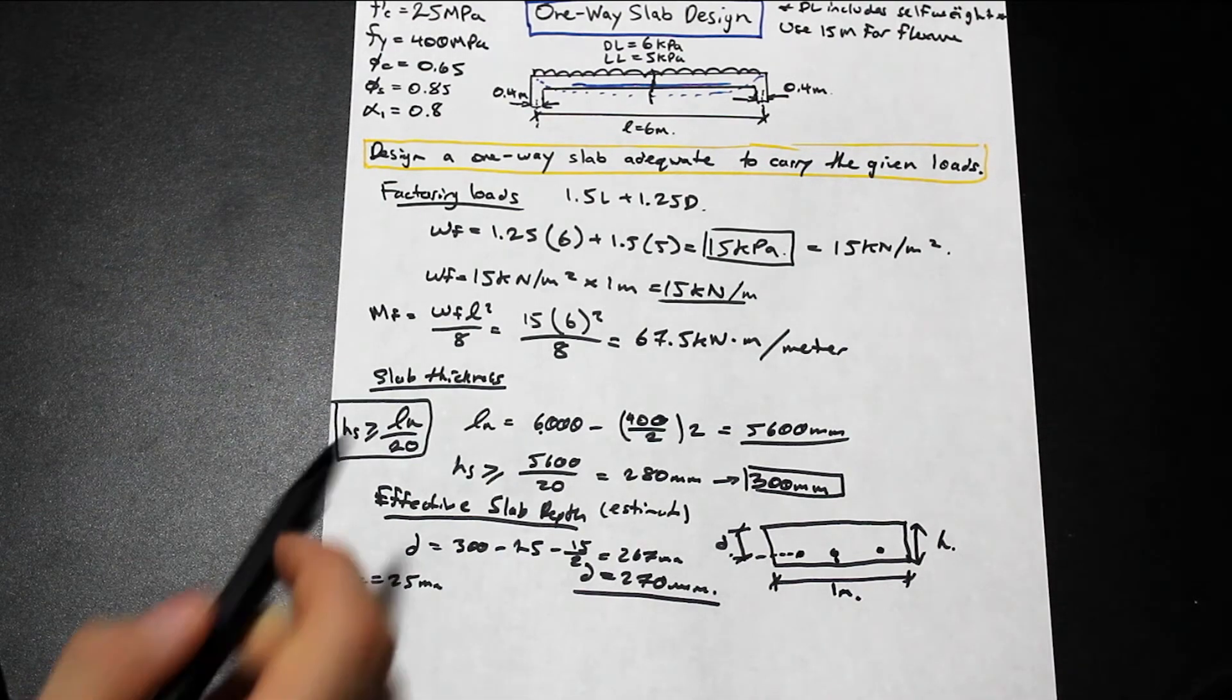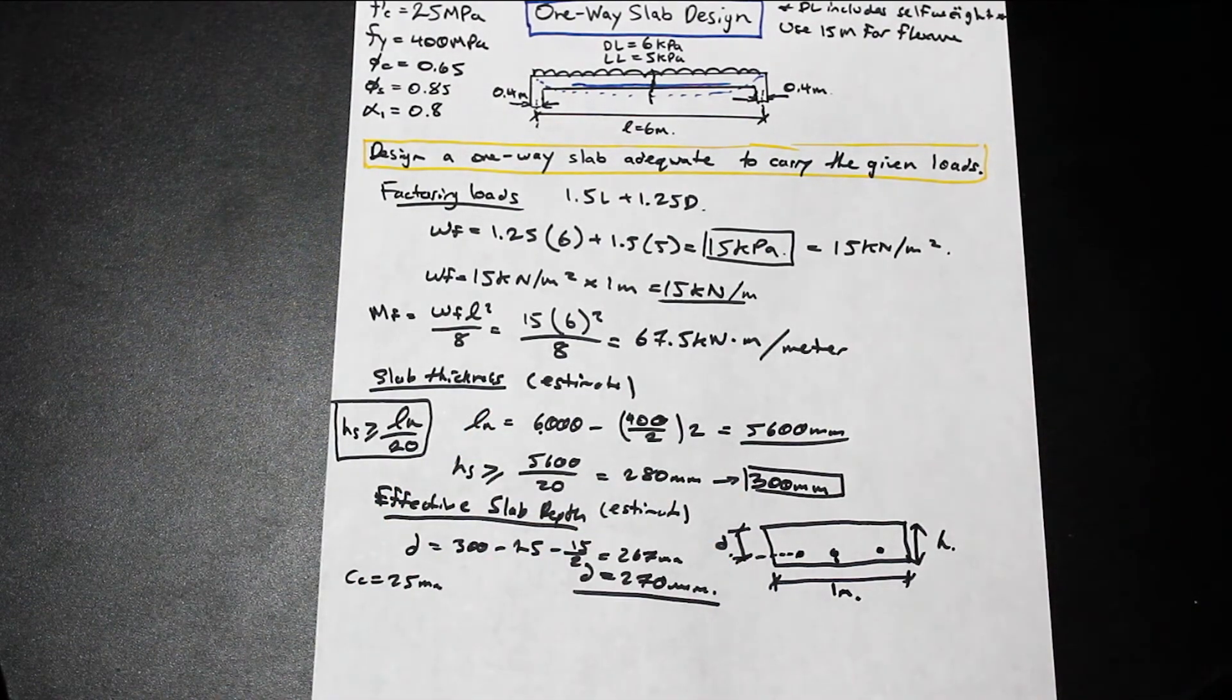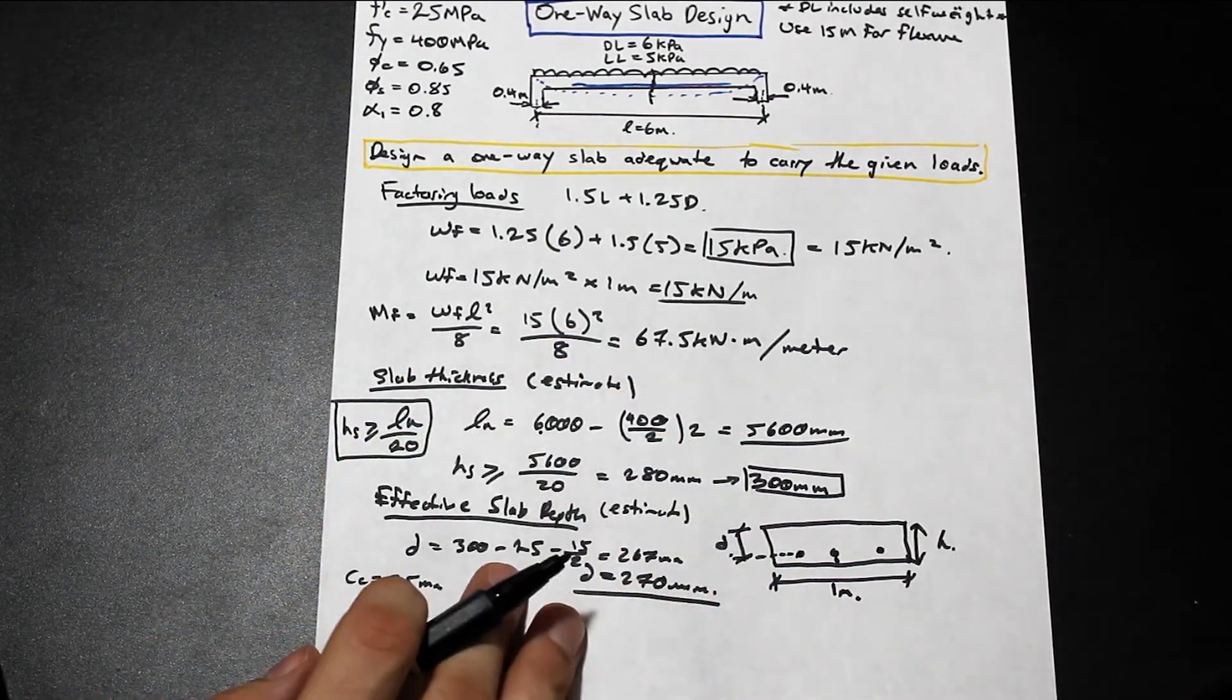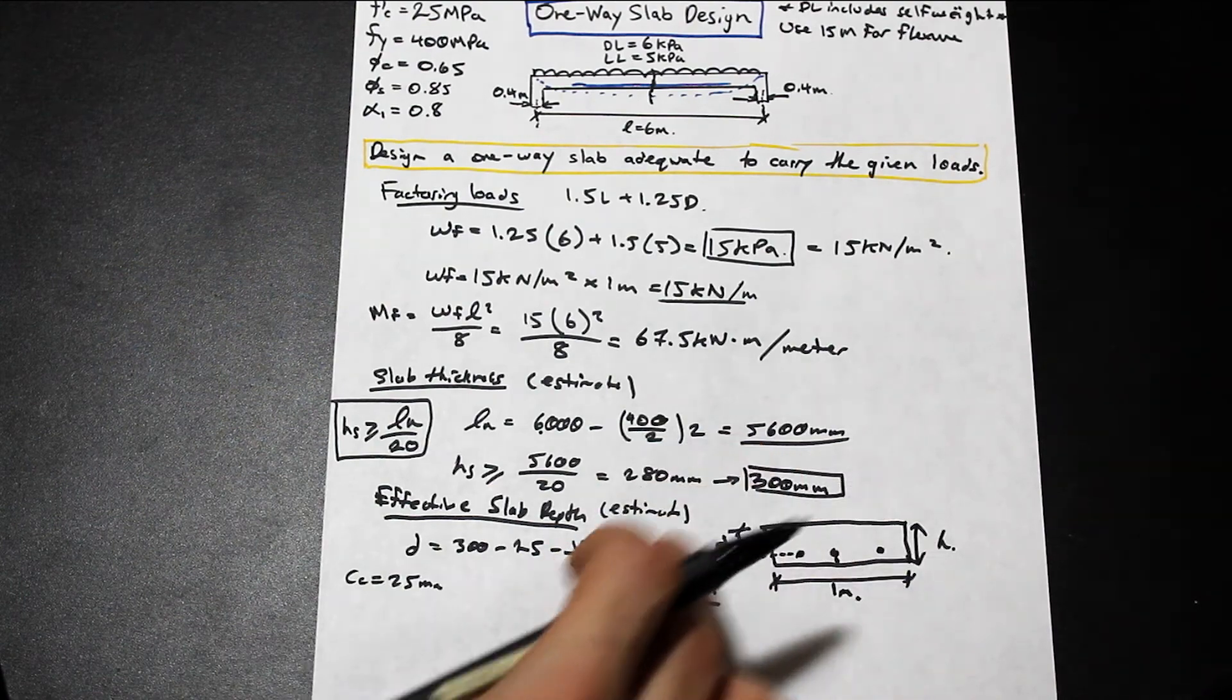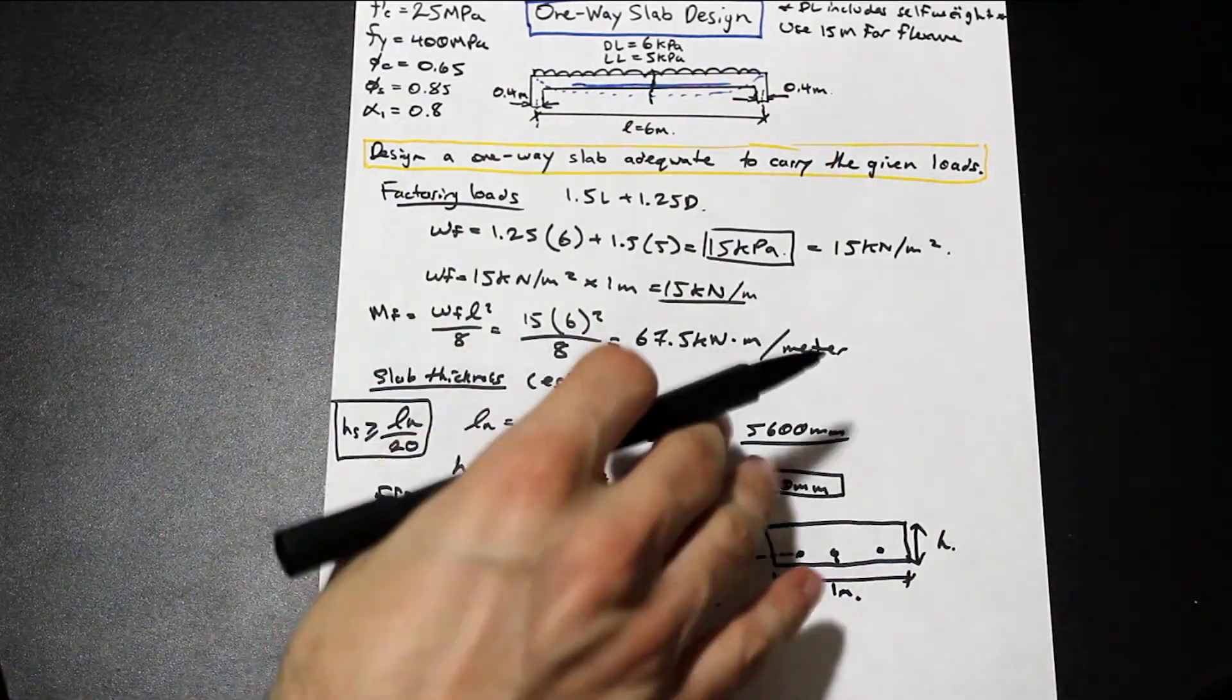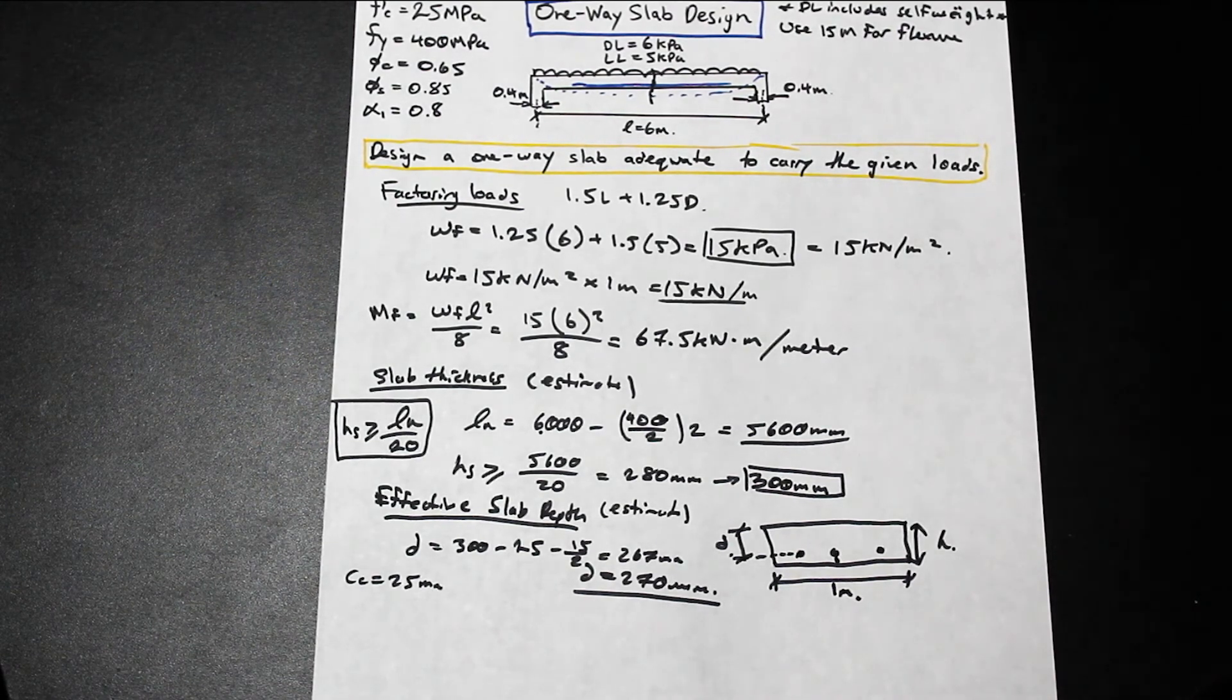So the last thing that we want to discuss is why are these estimates here? So this is an estimate, and this is an estimate. Now the reason why they're estimates is we don't know whether or not this thickness, or the effective depth, which is based on the thickness, is acceptable for shear or to carry these loads that are applied. These don't consider the loads, they just consider deflection requirements. So what we're going to need to do after we preliminarily check or estimate our slab height is that we're going to need to go ahead and we're going to apply these loads to our slab, and we're going to check and just make sure that the shear capacity is okay, and we're okay for flexure, and we can add enough bars in order to be safe for this slab design. So that's why they're estimates. We may need to change them if we find that our tests fail.